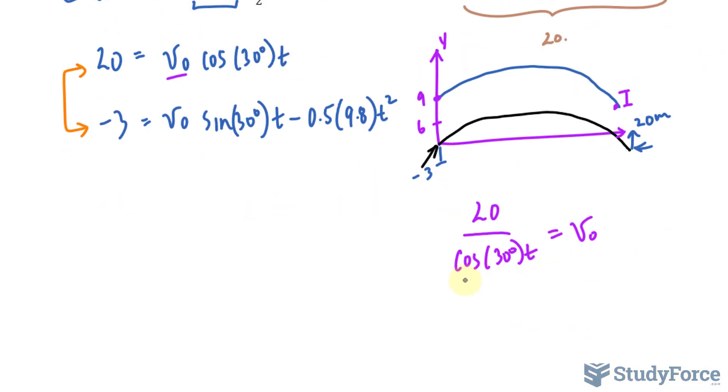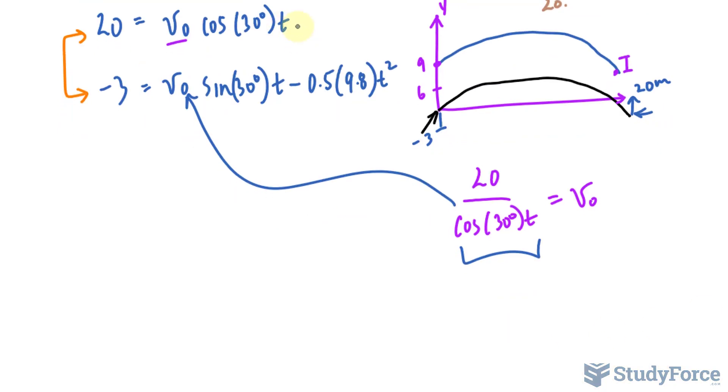I will take what v initial is equal to and throw it into there. What this will do is create an equation that's exclusively in terms of time. And once I find time, I can go back and substitute it into here to get v initial.